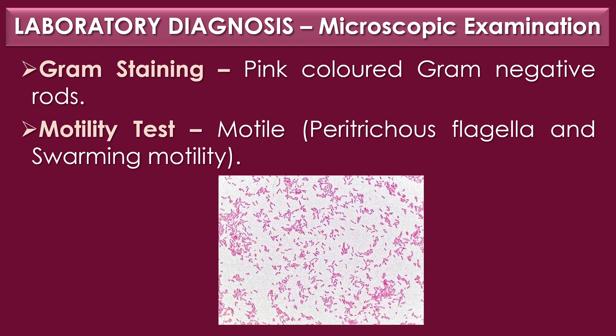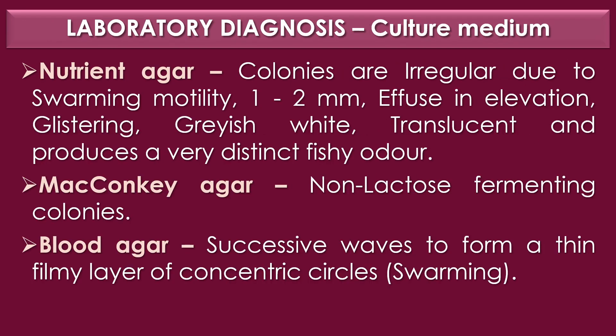Laboratory diagnosis of Proteus mirabilis: Under gram staining, Proteus mirabilis is observed as pink-colored gram-negative rods. In the motility test or hanging drop method, motile cells are observed due to the presence of peritrichous flagella, exhibiting swarming motility. On nutrient agar, Proteus mirabilis colonies are irregular due to swarming motility, ranging from 1 to 2 mm, effuse in elevation, grayish-white, and translucent, producing a distinct fishy odor. On MacConkey agar, Proteus mirabilis produces non-lactose fermenting colonies. On blood agar, Proteus mirabilis forms successive waves in a thin film of concentric circles, demonstrating swarming.